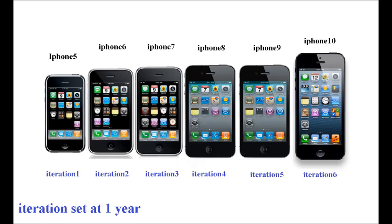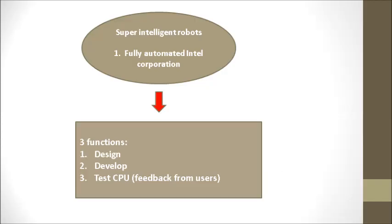Each generation of the computer CPU is called an iteration, set at one year for simplicity. The CPU is upgraded after each iteration. In less than 6 years the Intel 4 chip went through 6 transformations and turned into the Intel 10 chip. The primary function of the super-intelligent robots is three things: designing, implementing, and testing the computer CPU while considering consumer feedback. These super-intelligent robots serve as a fully automated Intel corporation.